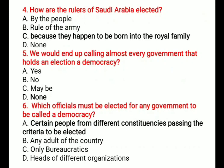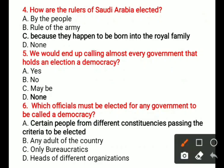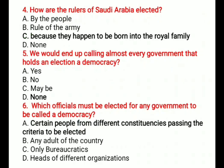Question 4: How are the rulers of Saudi Arabia elected? Options are: A) By the people, B) Rule of the army, C) Because they happen to be born into the royal family, D) None. The correct option is C, because they happen to be born into the royal family.